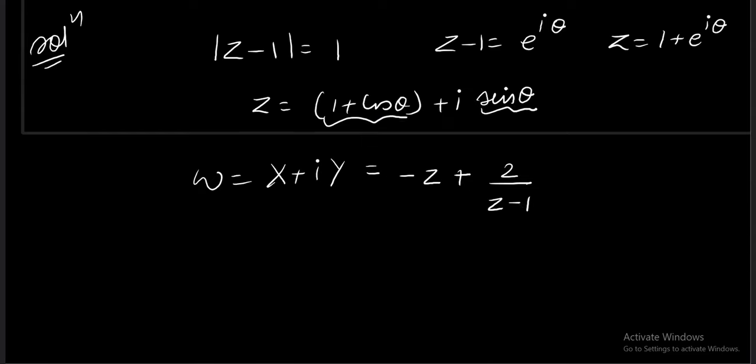Let's keep the values here now. Minus z I am going to write as minus 1 plus cos theta minus iota sin theta. Then we have plus 2 divided by e power iota theta.